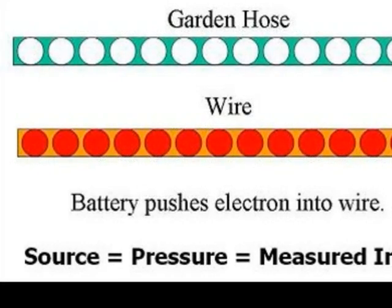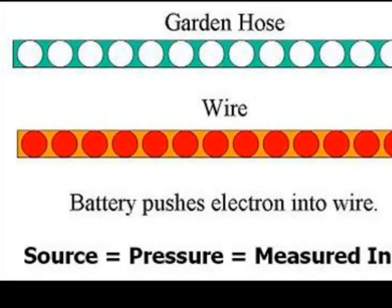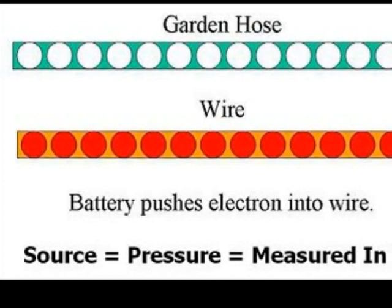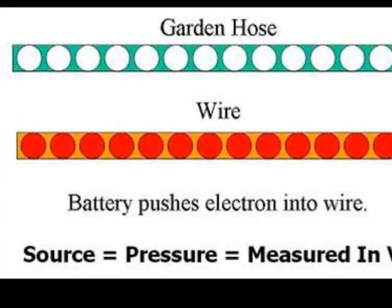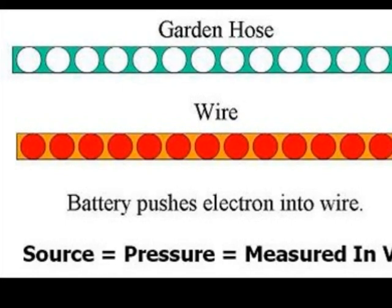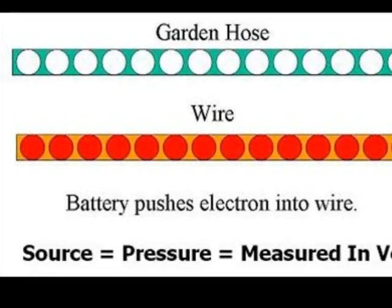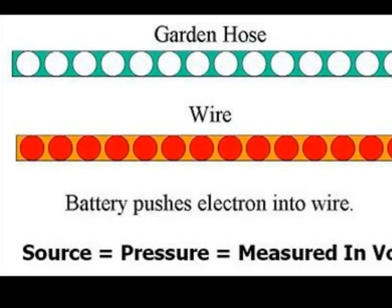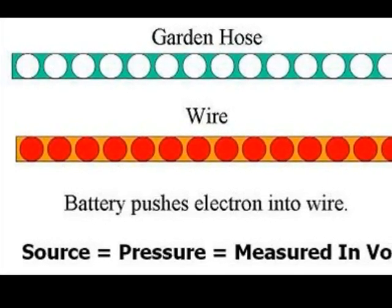For the first part of our example, we're going to hook up our source to our conductor. When we do this, the source tries to push an electron into the conductor. To visualize this, we're going to take our golf ball and push it into one end of the garden hose.